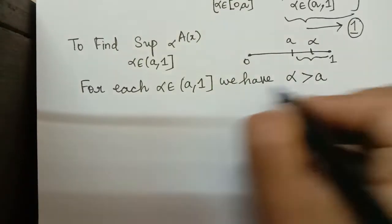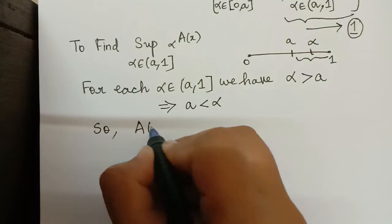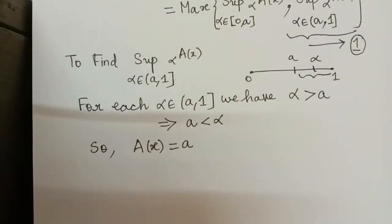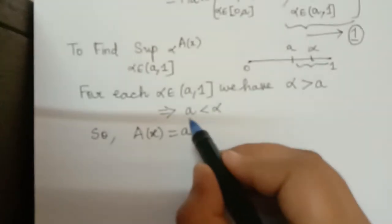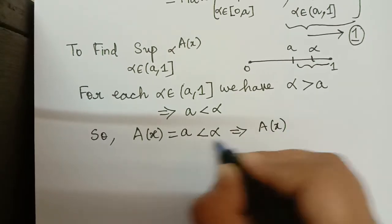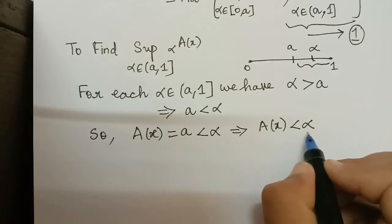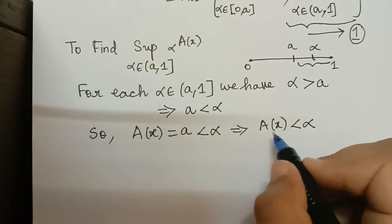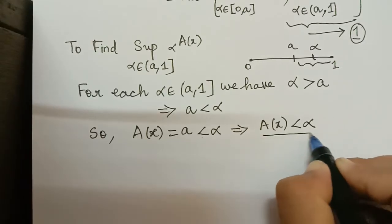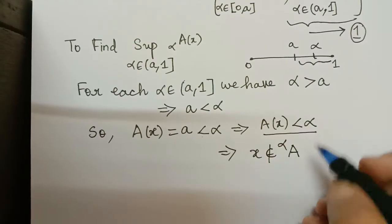Because alpha is strictly greater than a, we can write A(x) = a < alpha, which implies A(x) < alpha. If A(x) is less than alpha, then x will not be an element of the alpha-cut set. By the definition of the alpha-cut set, x is an element only if A(x) is greater than or equal to alpha. But here A(x) is less than alpha, so x is not an element of the alpha-cut set.